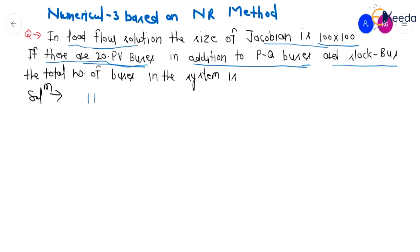So the question has been asking what will be the value of N. And we have been given the size of the Jacobian is 100 is equal to 2N minus M minus 1. So if we are able to find out the value of M, then we can easily calculate the value of N. M, we know that M is the value of number of PV buses including slack bus.